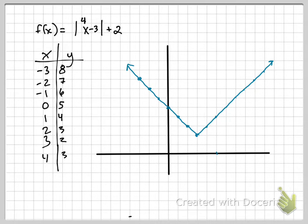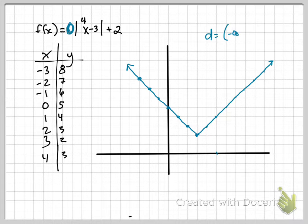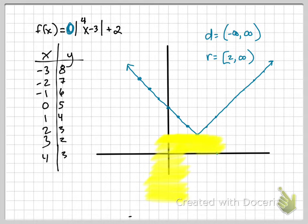Looking at this, could you tell whether it was going to be peaks or valleys? Is there a negative out front? No. If there's no negative out there, it's going to be a valley. If there's a negative out there, it's going to be a peak. Domain is still negative infinity to positive infinity. The range: what's the first y value I come to? Two — and it goes up to infinity.